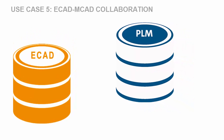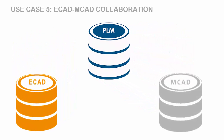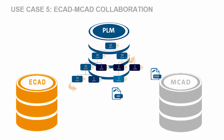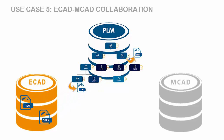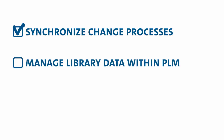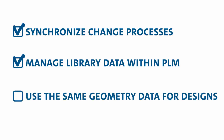Use case 5: ECAD to MCAD collaboration. Exchange data bi-directionally between ECAD and MCAD via PLM — for example, IDF and STEP. MCAD engineers can import ECAD geometry into their assemblies and can export data out for re-import back into ECAD. The ECAD and MCAD documents are linked to the same bill of material. You can synchronize electronics and mechanics using exchange data to align components. Furthermore, you can also synchronize change processes across all engineering disciplines, manage library data within the PLM environment, and use the same 2.5-dimensional and respective 3D geometry data for ECAD and MCAD design.